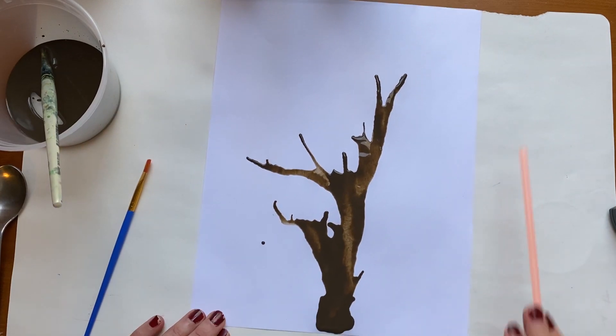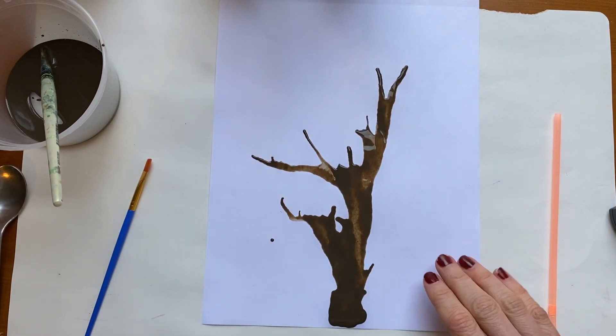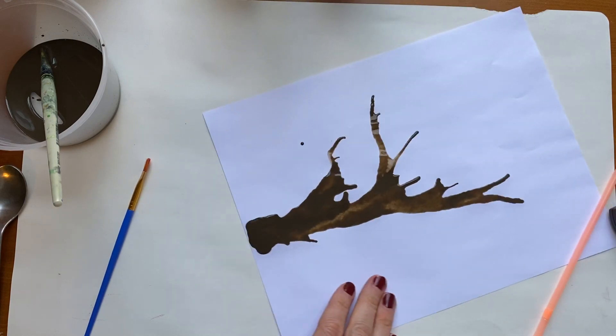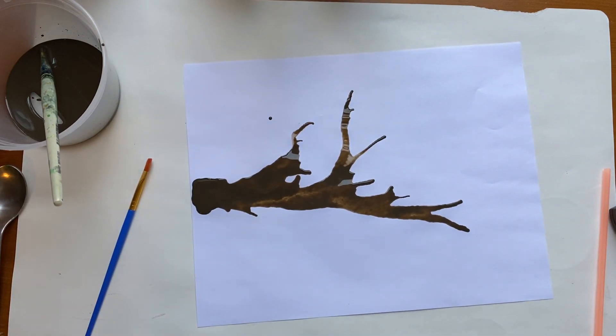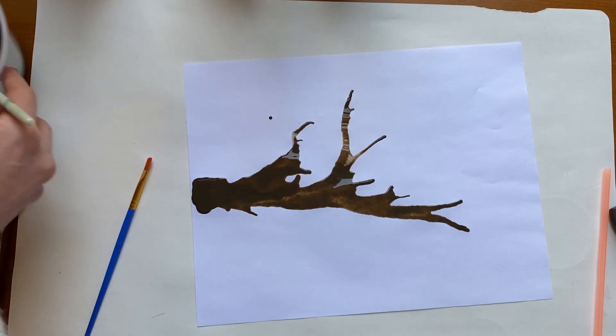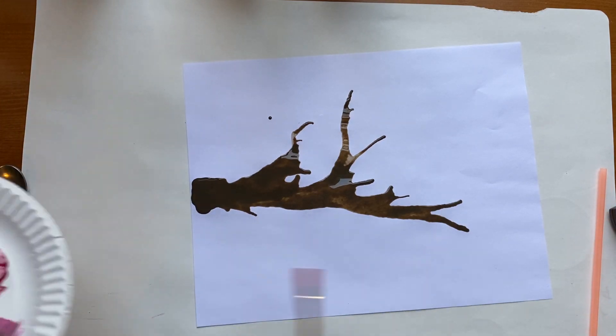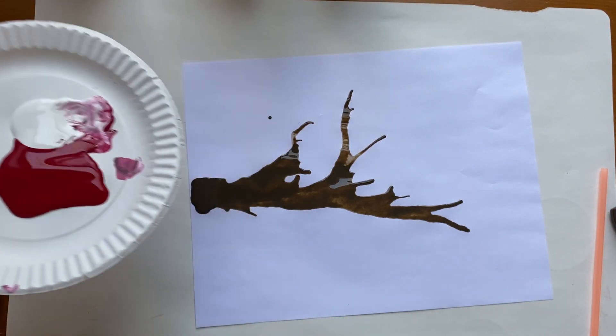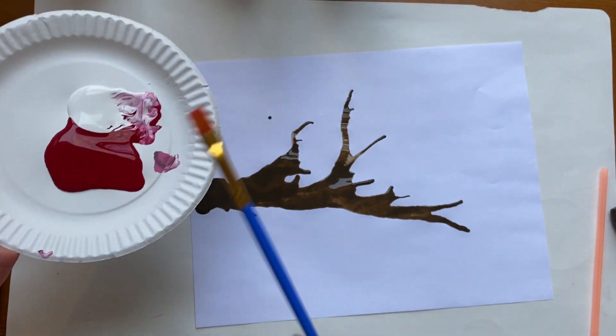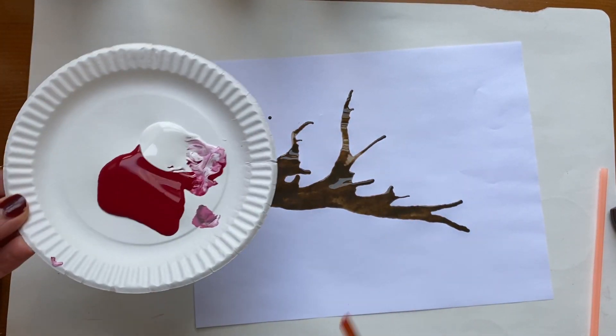Does that look cool? Awesome. I think I might turn it like this. So now that you have your branch, what I would do is I would definitely let this dry before you start adding your flowers, just because if you start adding other colors on top it's just gonna mix with the brown and it's gonna get all muddied up.